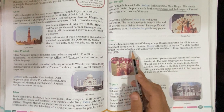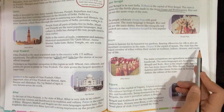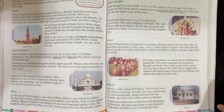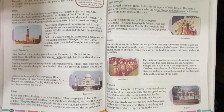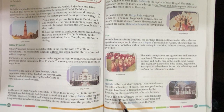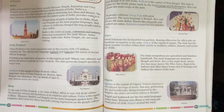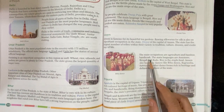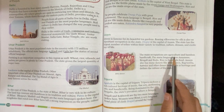Assam has the largest number of tribes with great variety in tradition, culture, dresses, and way of life. Tribes are groups of people with a different culture, religion, and lifestyle. The main occupations are agriculture and bamboo handicraft. The main languages are Assamese, Bengali, and Bodo.